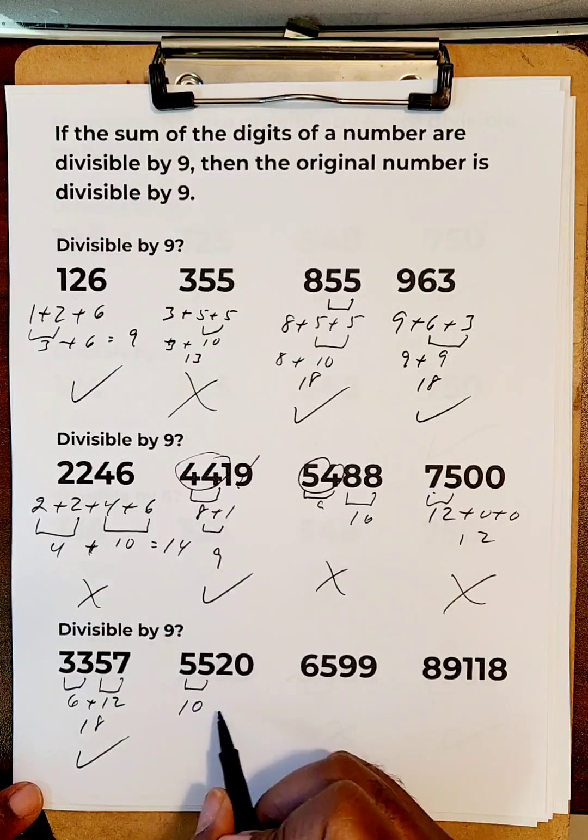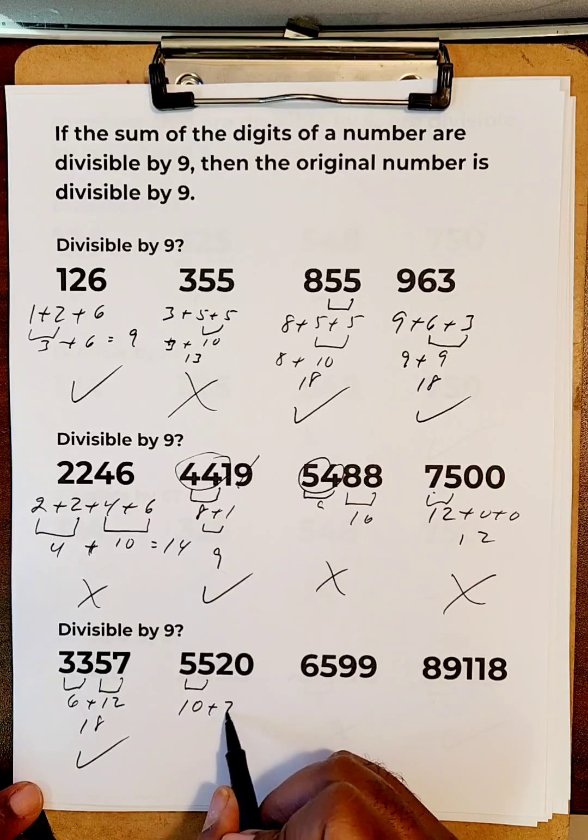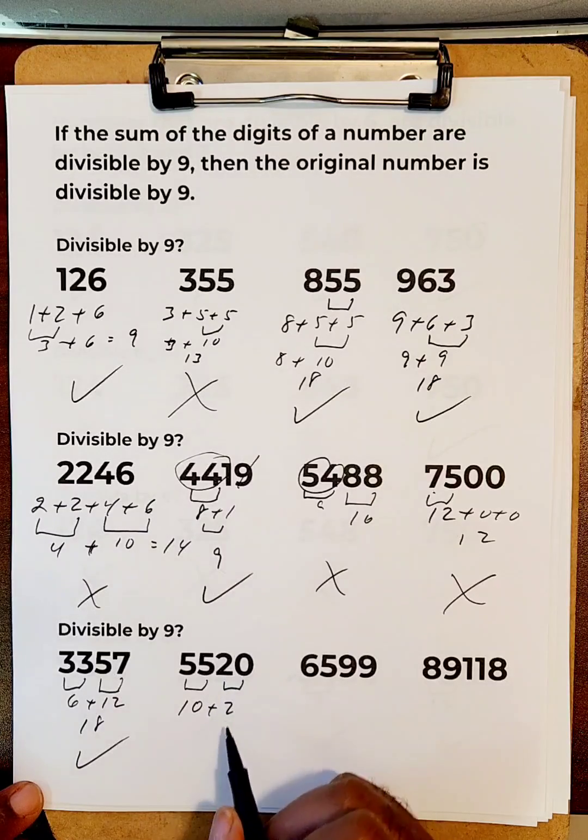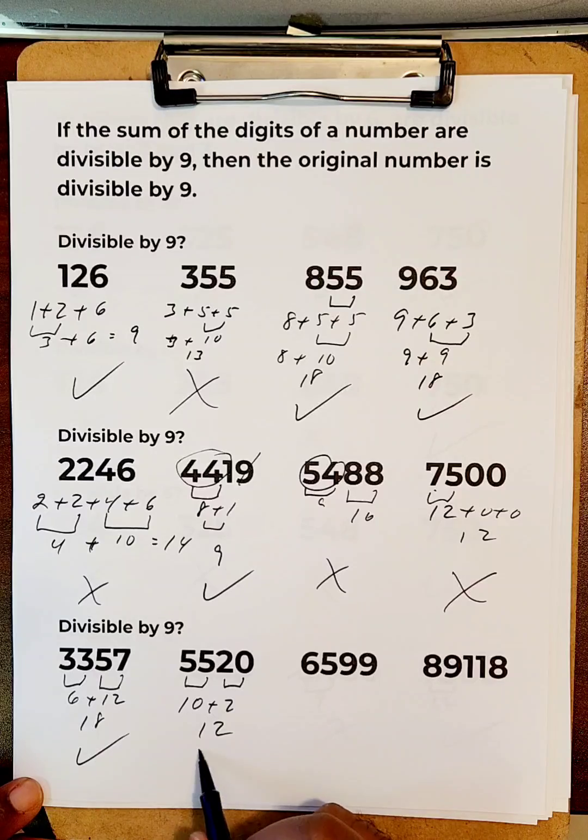5 plus 5 is 10. 10 plus 2. 2 and 0. That's 12. That is not in the 9 timetables.